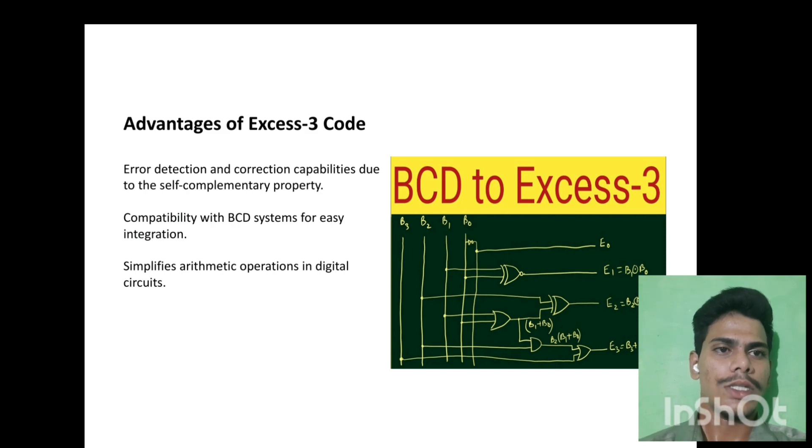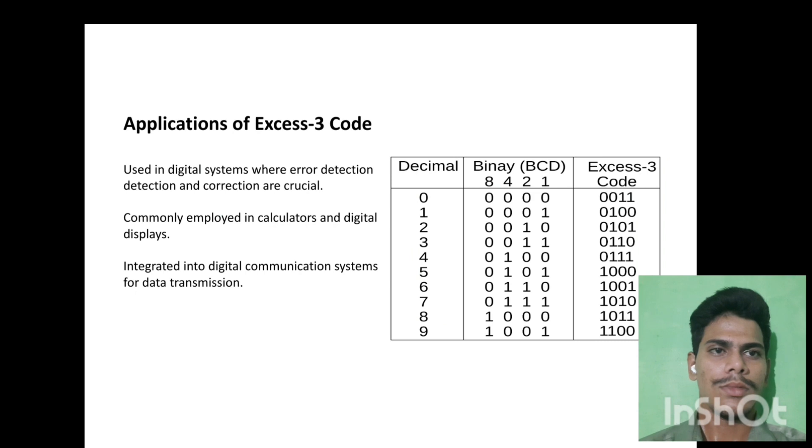BCD to XS3 code - we see the circuit. Applications of XS3 code. Used in digital systems where error detection and correction are crucial. Commonly employed in calculations and digital displays. Integrated into digital communication systems for data transmission.